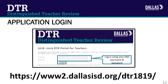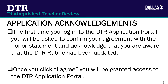Teachers will learn if they earned a Distinguished Effectiveness Level based on the 2018-2019 school year on their TEI scorecard released in September 2019 via Oracle. DTR eligible teachers may access the DTR application portal by visiting www.dallasisd.org/DTR1819. Teachers will be emailed the link to the DTR application portal on September 28th. To sign in, teachers will use their EAD username and password. After teachers sign in to the application portal, DTR eligible teachers will be asked to confirm their agreement with the honor statement and acknowledge that they are aware that the DTR rubric has been updated. Once a teacher clicks 'I agree,' they will be granted access to the DTR application portal.